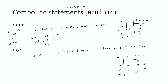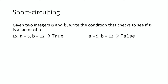We're going to practice this in the lab. The last thing worth talking about is short circuiting — and it's actually a good thing in computer science, whereas in circuit building it's considered bad. Here's an example problem: given two integers a and b, write the condition that checks whether a is a factor of b. So the condition should be true if a is a factor of b, and false otherwise.